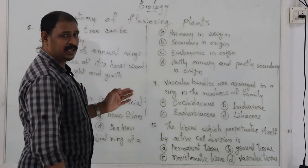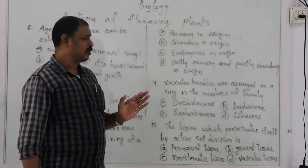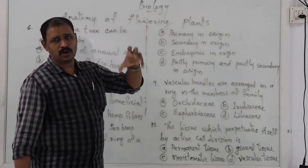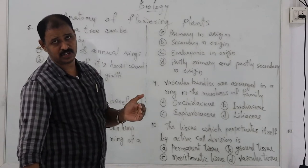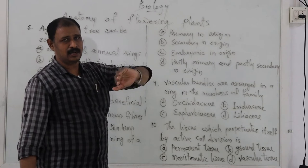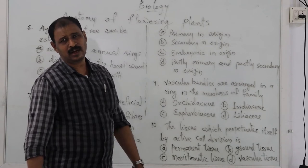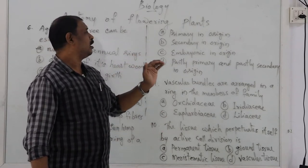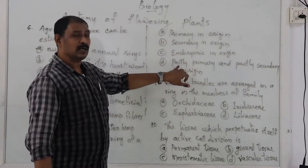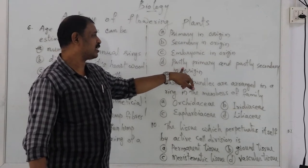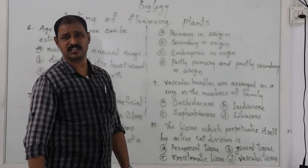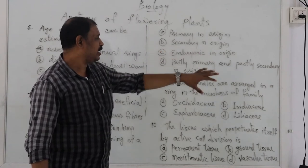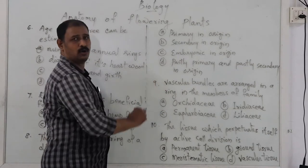Secondary thickening occurs in the dicot stem. The vascular cambium is formed during the growth stage. The intrafascicular cambium is primary in origin, but the interfascicular cambium formed during secondary thickening is secondary in origin. The medullary ray is formed in secondary thickening. Therefore the vascular cambium is partly primary and partly secondary in origin. Option D is the most suitable option.